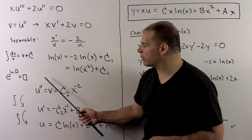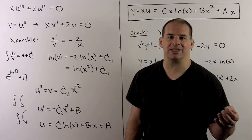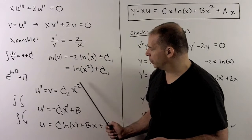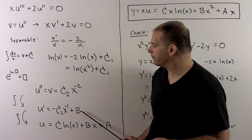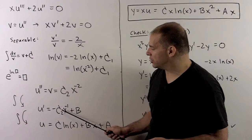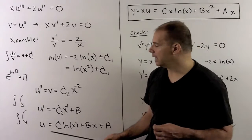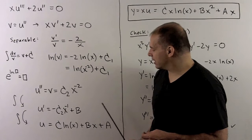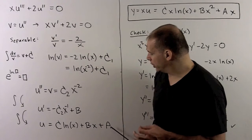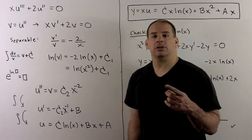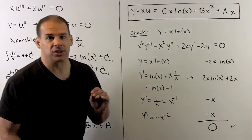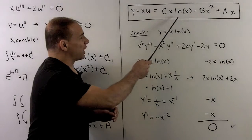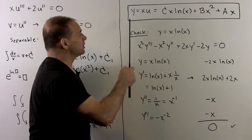Since V equals U double prime, we integrate twice to get U. For the first integration, U prime equals minus C2 X to the minus 1 plus B, absorbing the minus sign into C2. Integrating again, X to the minus 1 becomes natural log of X, giving U equals C natural log of X plus BX plus A. To get Y, we multiply U by X, so the general solution is Y equals CX natural log of X plus BX squared plus AX.